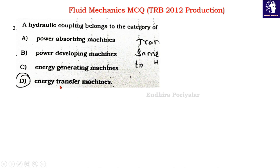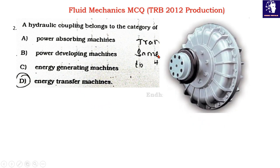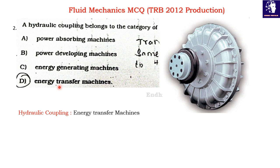Question 2: A hydraulic coupling belongs to which category? Option A: Power absorbing machines; Option B: Power developing machines; Option C: Energy generating machines; Option D: Energy transfer machines. A hydraulic coupling is a power transmitting device — it is an energy transfer machine. Option D is the correct answer.